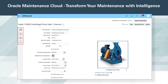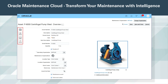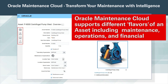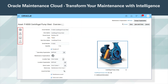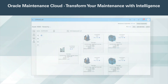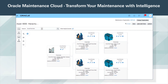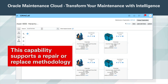The asset is the foundation of Maintenance Cloud. Its asset model provides a flexible and robust common data model that supports enterprise-owned and customer-owned assets. Oracle Maintenance Cloud supports different flavors of an asset, including maintenance, operations, and financial. Information pertinent to each owner will vary. From the asset you can access a 360-degree view of asset, meters, and asset hierarchy. The physical asset hierarchy is essential for locating the asset at your site to report a problem. It is leveraged in the asset cost roll-up to identify where and what assets are the most expensive to maintain. This capability supports a repair or replace methodology.